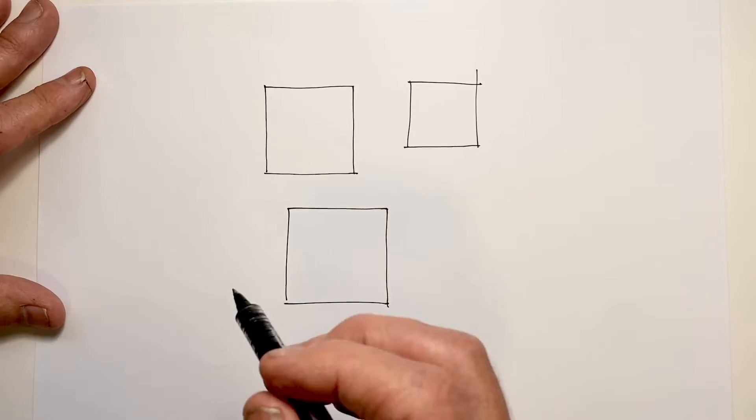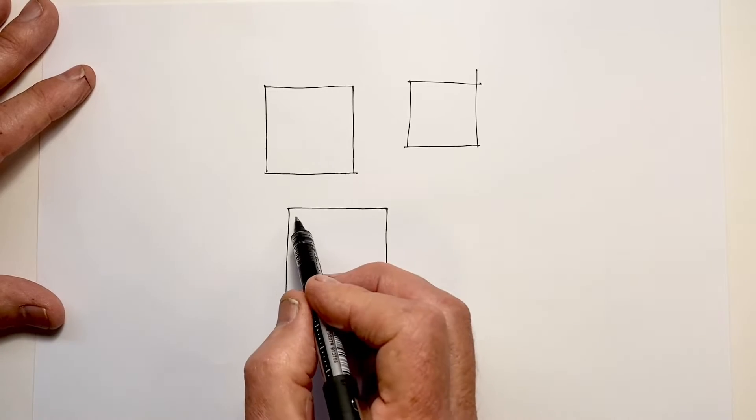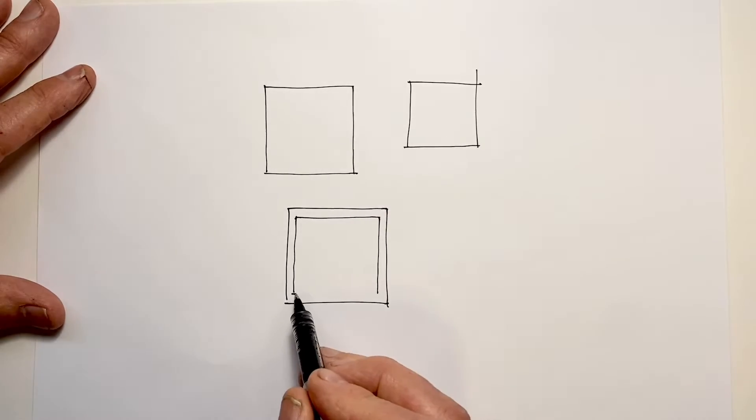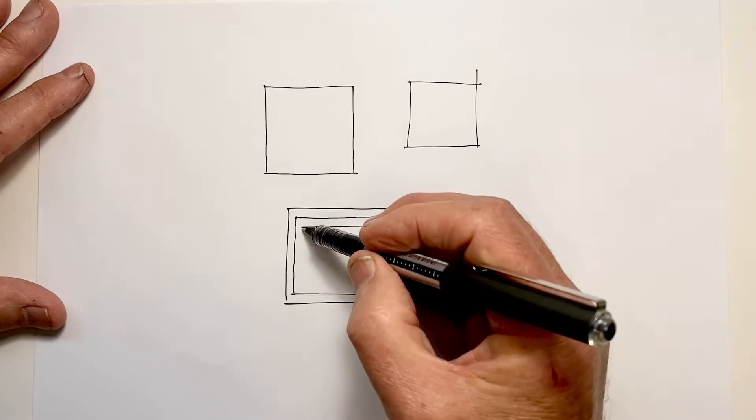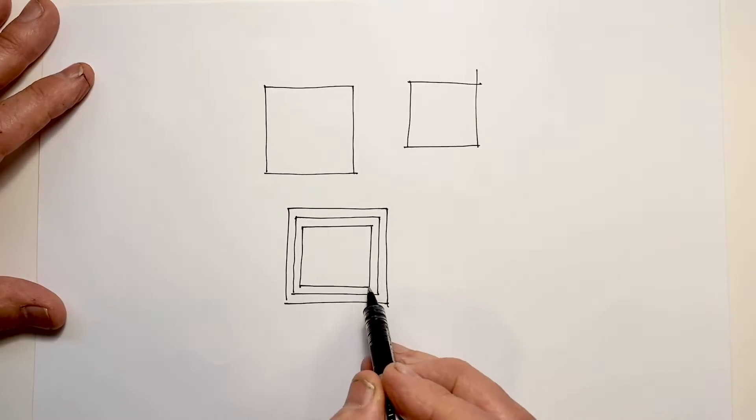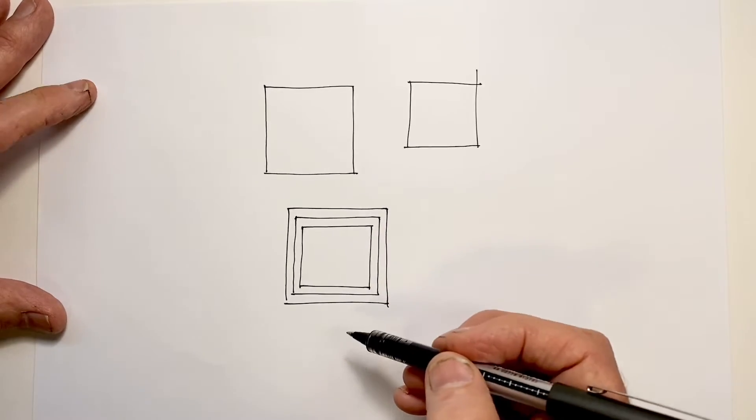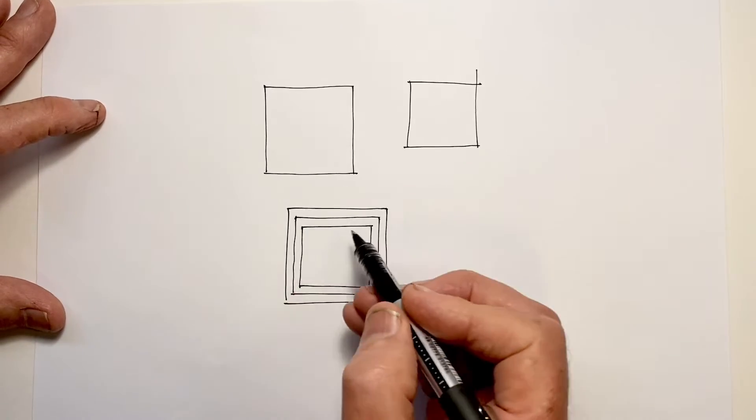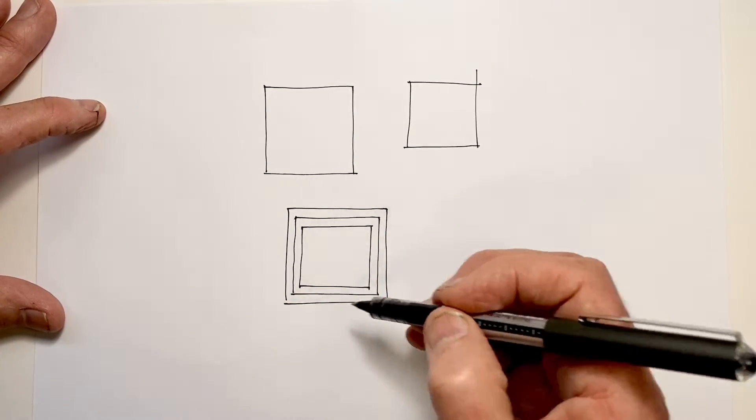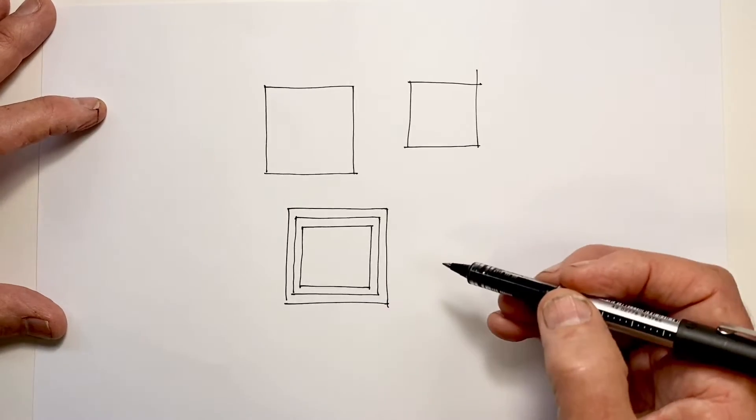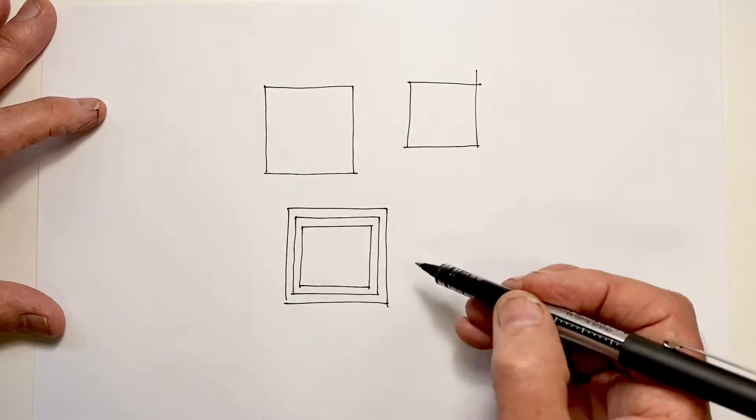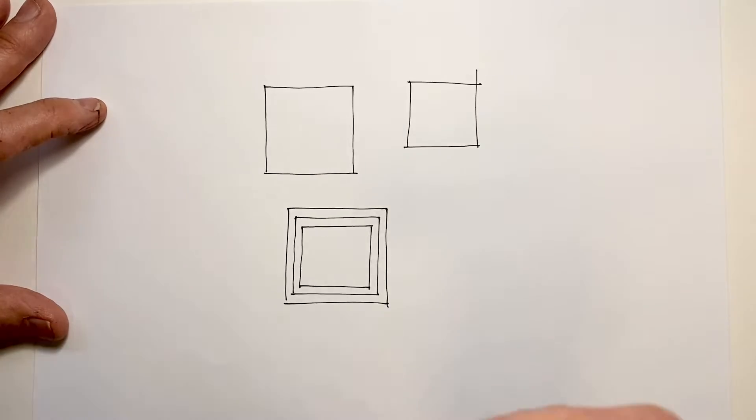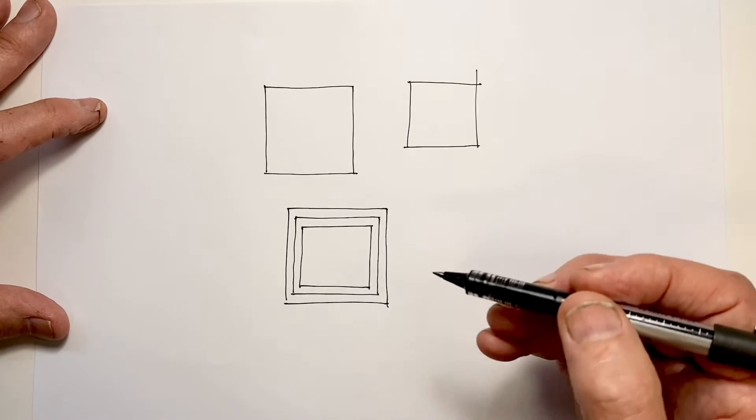As a further exercise, we can draw squares within the squares. This may show us exactly how accurate our square is, but it also gives us practice at drawing parallel lines quite close to each other, which is very common, of course, when we're drawing buildings. So drawing squares and squares within squares is a great way of developing our line technique.